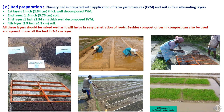The third step of raising nursery is bed preparation. The nursery bed is prepared with application of farmyard manure and soil in 4 alternating layers: first layer of 1 inch of well-decomposed farmyard manure; second layer of 1.5 inch of soil; third layer of 1 inch of well-decomposed farmyard manure; and fourth layer of 2.5 inches of soil. All four layers should be mixed well to help in easy penetration of roots. Compost or vermicompost can also be spread over the beds in 3 to 5 cm layers for better seedling growth.